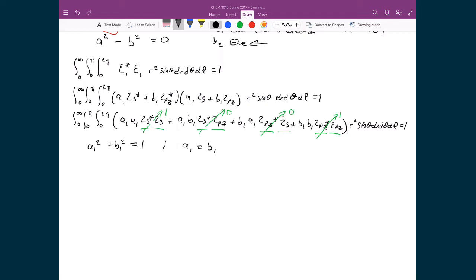So we can actually simplify this and we can just say, well, A1 squared plus A1 squared is equal to 1, which means 2A1 squared is equal to 1, which means that A1 is equal to 1 over the square root of 2. And so then this implies that B1 is also equal to 1 over the square root of 2.